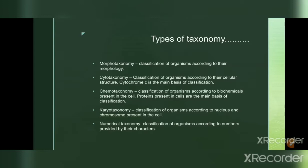In karyotaxonomy, we study the nucleus — 'karyo' means nucleus. We classify organisms according to their nuclear and chromosomal structure. This system uses information like chromosome number, structure, size, shape of chromosomes, and binding patterns of chromosomes during meiosis to classify organisms.